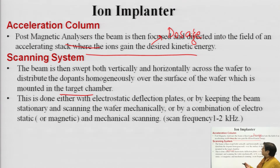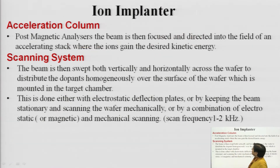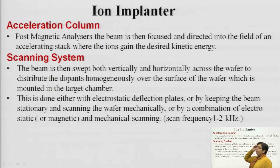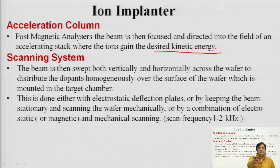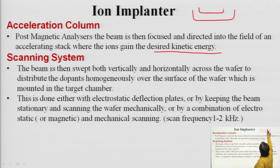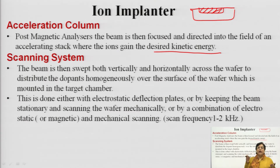After the analyzer magnet, there is the accelerating column. Once the beam has been analyzed and the system is properly set, it is accelerated so that it strikes the target with the exact kinetic energy. The beam is not supposed to only strike — it must cover the entire area where you need diffusion to happen. Therefore, the beam must scan that entire area, which is the job of the scanning system.